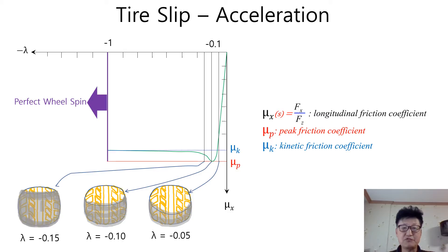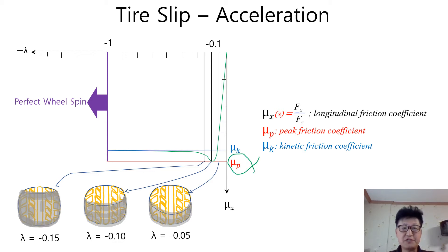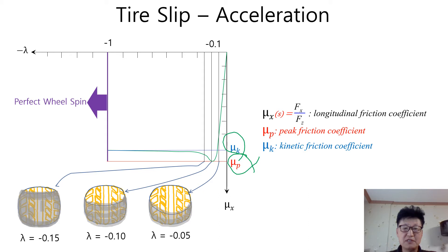This graph describes the longitudinal friction coefficient as a function of longitudinal slip ratio lambda. Mu_P is the peak friction coefficient, which is similar to the static friction coefficient, and Mu_K is the kinetic friction coefficient. Acceleration force will be maximized at the peak friction coefficient. If the acceleration force is big enough to overcome the peak friction coefficient, wheel spin happens without the wheel movement. You can see various tire contact patches depending on their slip ratios here.